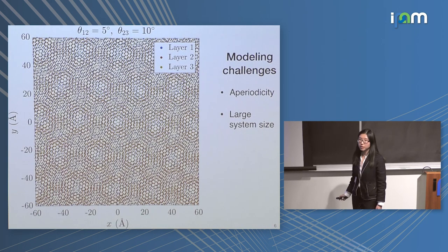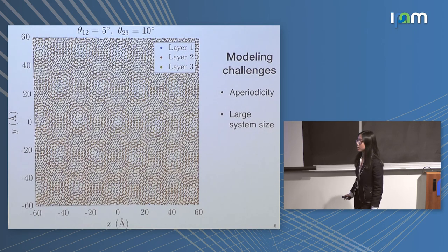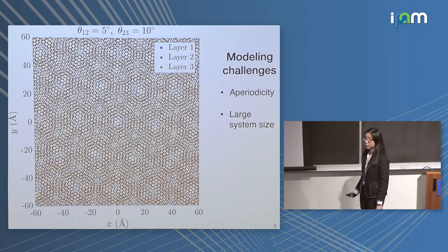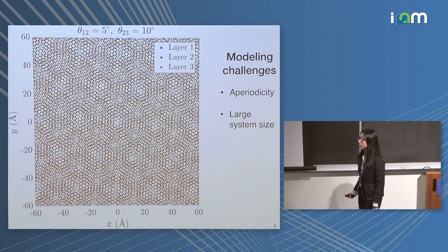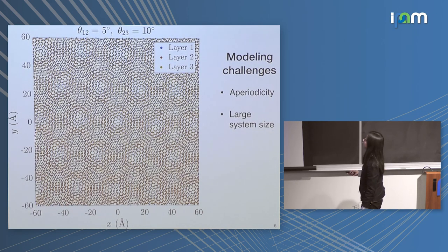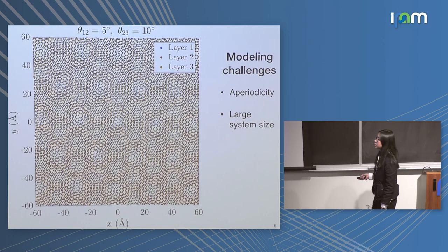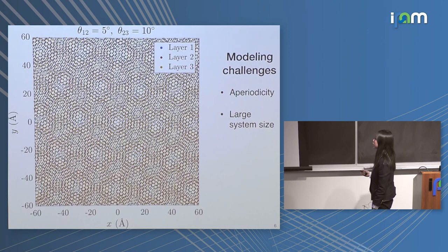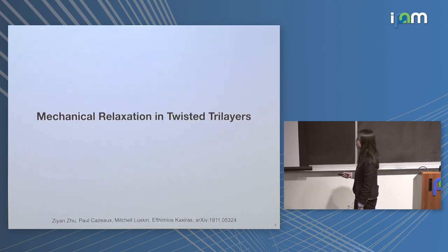Even in the case where we do have a supercell approximation, the periodicity is super large. To give an example: at two-degree twisted bilayer graphene, the moiré length is about seven nanometers. But if you add another twist angle at two degrees as well, the moiré length now becomes about hundreds of nanometers. This is a really large system size and really difficult to model from a first-principles point of view, even in a tight-binding description.